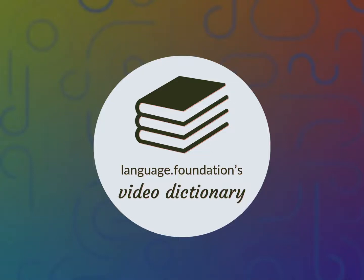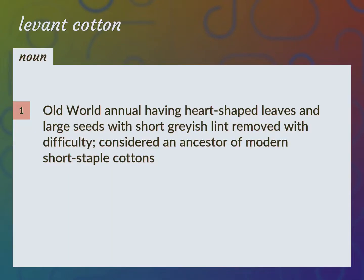Language Foundation's Video Dictionary, helping you achieve understanding. Old World Annual having heart-shaped leaves and large seeds with short grayish lint removed with difficulty, considered an ancestor of modern short staple cottons. Gossypium Herbaceum.